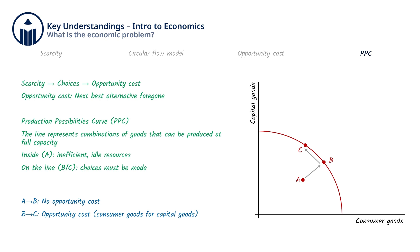Opportunity cost can be expressed on a production possibilities curve, or PPC. The PPC represents the combinations of two goods — in this case, consumer goods, being those you and I purchase like shoes, vegetables, or sports equipment, and on the other axis, capital goods, which are the goods used to make other goods, like combine harvesters, data centers, and the machine that puts a little plastic thing at the ends of shoelaces — when all factors of production are being used to their full potential. The combination of consumer goods and capital goods produced at point A is inefficient, as there are unused factors of production left idle, or the factors of production are not being used to their full potential with given levels of technology. If idle resources, like unemployed people, become employed, we might move from point A to point B, which is on the PPC, meaning the economy is operating at full capacity with all factors of production being used as efficiently as possible.